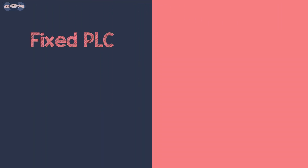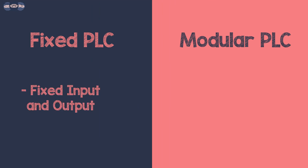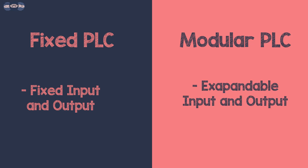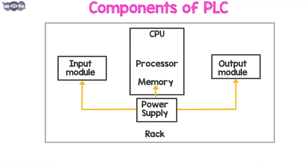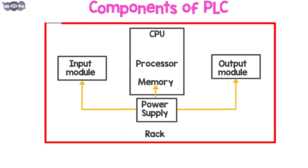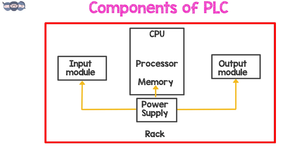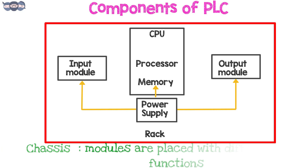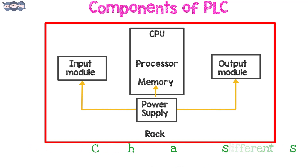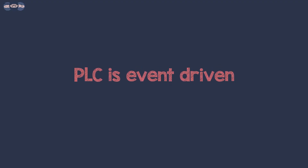There are two types of PLCs: the fixed and modular. A fixed PLC contains a fixed number of inputs and outputs. In a modular PLC, inputs and outputs can be expanded. The rack is the component that holds everything together. Modular PLCs have a chassis, also called a rack, into which modules with different functions are placed.